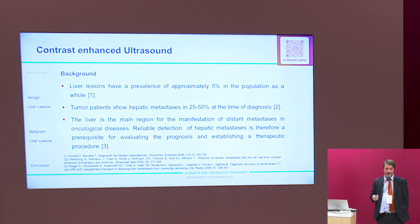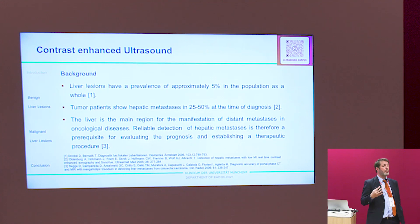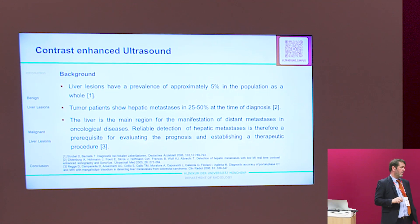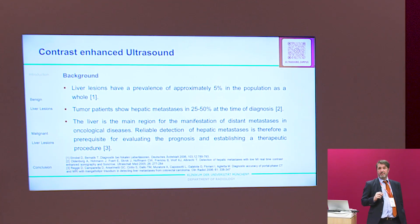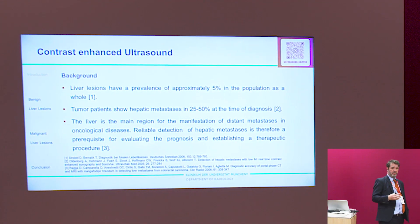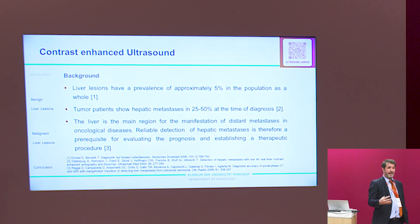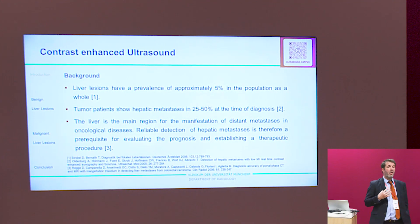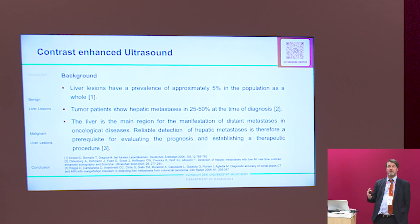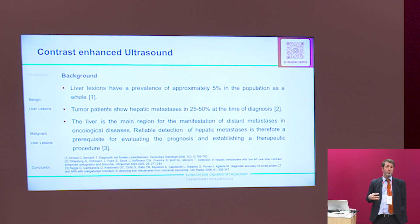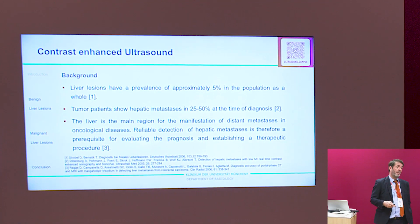Around 5% of the whole population has a liver lesion. Most of the time it is a benign lesion — that's good. Unfortunately, at the day of cancer diagnosis, around 50% of patients already have liver metastases. To offer the best treatment, you have to know whether it is a benign lesion or liver mets. That is the reason why we use contrast-enhanced ultrasound to determine what kind of lesion is present.